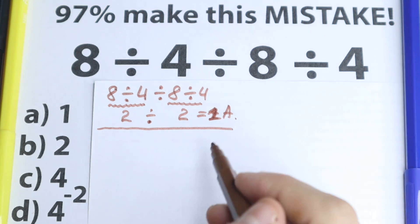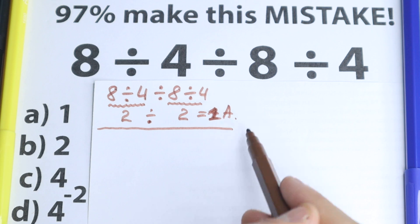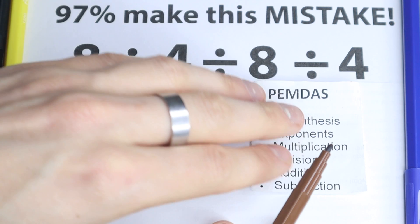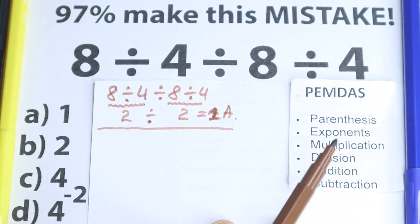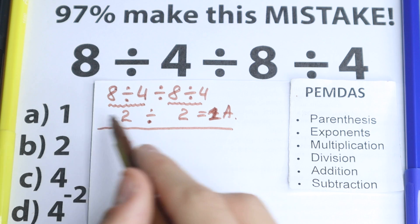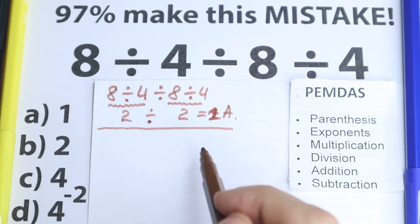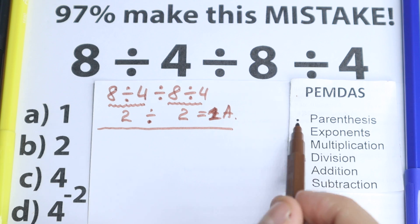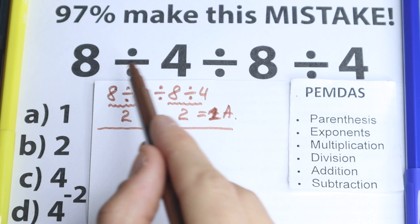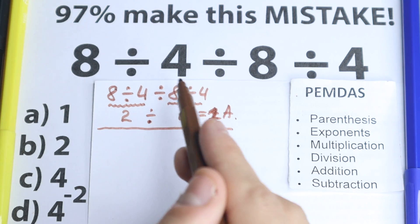So we need to understand what is the correct order to do this problem. In math we need to know one and only one correct solution — we cannot solve it two different ways and get different answers. So for this question let's look at the PMDMC order of operations. This is the most popular order of operations and I will use it to solve this question.